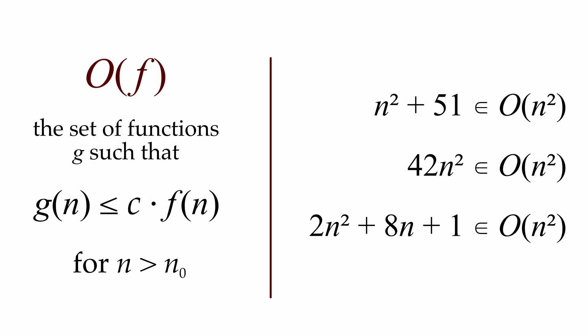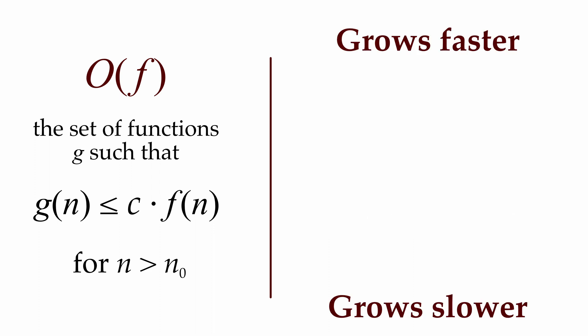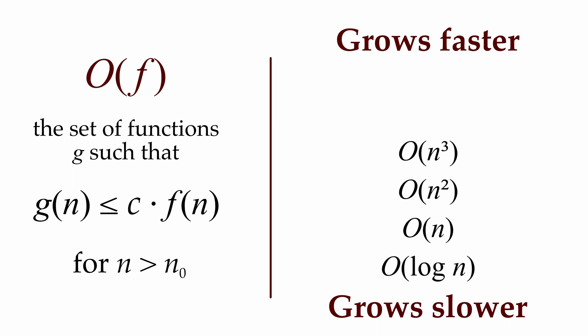Using a function's big O classification, we can compare whether certain functions grow faster or slower than others. Functions with bigger exponents grow faster than functions with lower exponents. Linear functions grow faster than logarithmic functions. Exponential functions grow faster than polynomial functions, and exponential functions with a larger base grow faster than those with a smaller base.